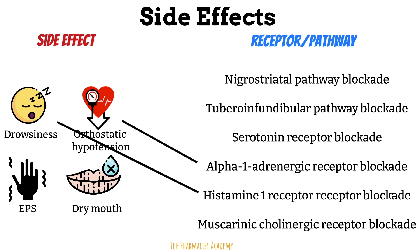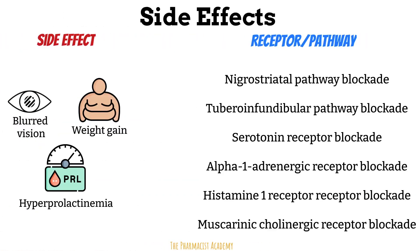Extrapyramidal symptoms (EPS) — characterized by tremors, rigidity, bradykinesia (slowness of movement), and tardive dyskinesia (involuntary movements, typically of the face and tongue) — are due to blockade of D2 receptors in the nigrostriatal pathway, which is involved in motor control. Dry mouth and blurred vision are due to blockade of acetylcholine at muscarinic receptors. This muscarinic inhibition also causes constipation and urinary retention.